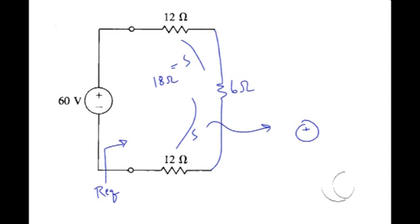So this circuit could be simplified like this. The equivalent resistance seen by the 60-volt source is 30 ohms.